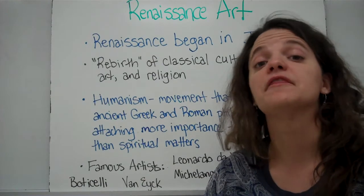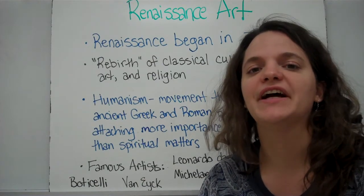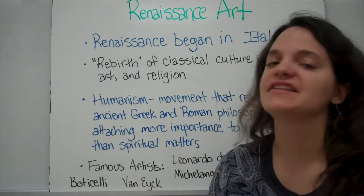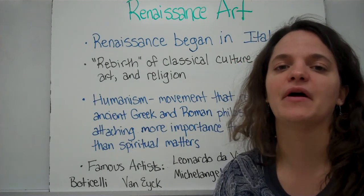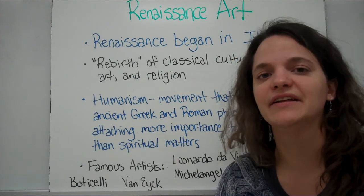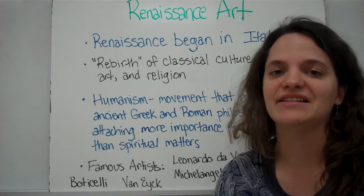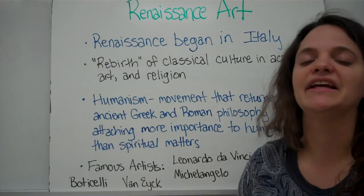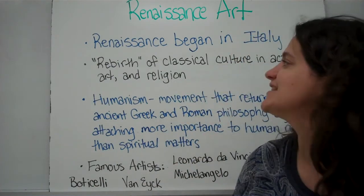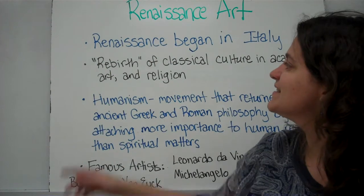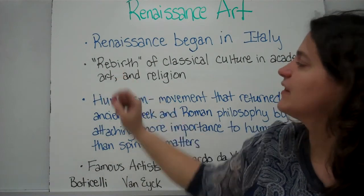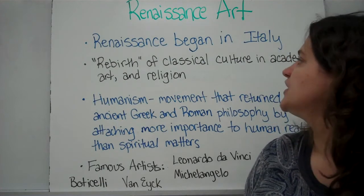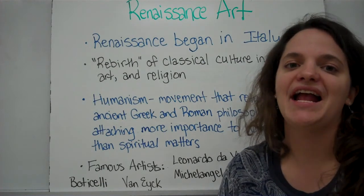Today we're going to be talking about the Renaissance, and in particular Renaissance art. The art in the Renaissance reflected all of the other changes that were going on politically, religiously, and academically. The first thing you need to know is that the Renaissance began in Italy — sometimes it's called the Italian Renaissance. The word Renaissance literally means rebirth, so it was a rebirth or renewal of classical culture in academics, art, and religion.